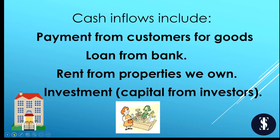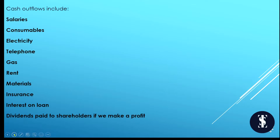Typical cash inflows include payment from customers for goods, your sales, any bank loan you might receive, rent from properties you own, and any capital investment coming in. Cash outflows include salaries, consumables, electricity, telephone, gas, rent, materials, insurance, interest on your loan when paying it back, and dividends paid out to shareholders if you make a profit.